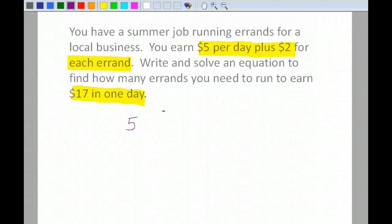Well, how many errands did you run? I don't know. So it says plus $2 for each errand. So if I ran two errands, I would get $4. If I ran three errands, I would get $6. So what am I doing there? I'm multiplying. So I'm going to put E for errand, and I want to know how many errands I need to run to earn $17.